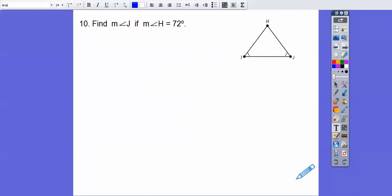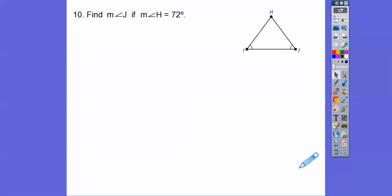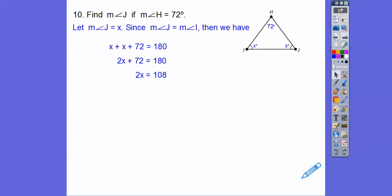Find J if H is 72. Now, if we didn't know this, we wouldn't know what to do, but these two angles are equal. So I'm going to let this be X. So X plus X plus 72 equals 180. We get 2X equals 108, so X equals 54. So that's what J is, 54. So is I.